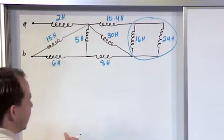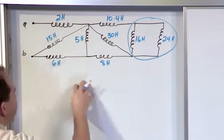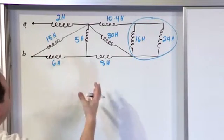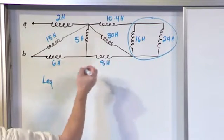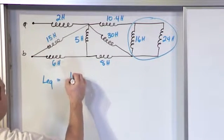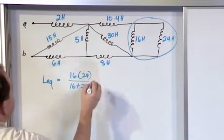And again it behaves like resistors, so whenever you have things in parallel, you have to use the parallel rule for inductors, which is the same as the parallel rule for resistors. And since we have two of them, we can do product over sum. So 16 times 24 over 16 plus 24, that's product over sum.